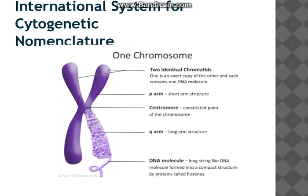To understand karyotyping, we need to know about the chromosome. A chromosome has two identical chromatids. There is a short arm known as the P arm, a long arm known as the Q arm, and a constricted point of the chromosome known as the centromere.